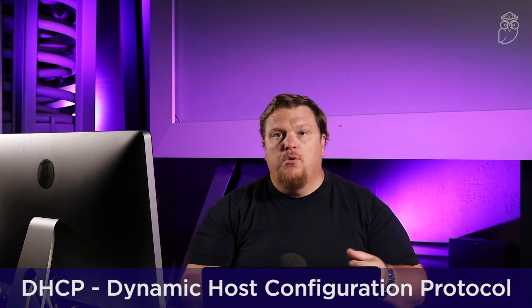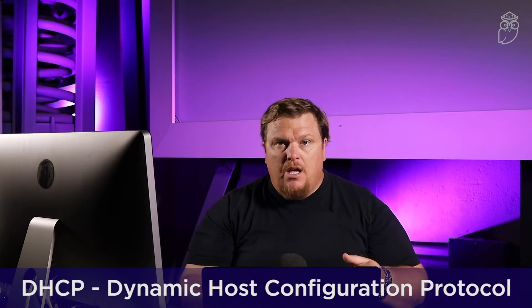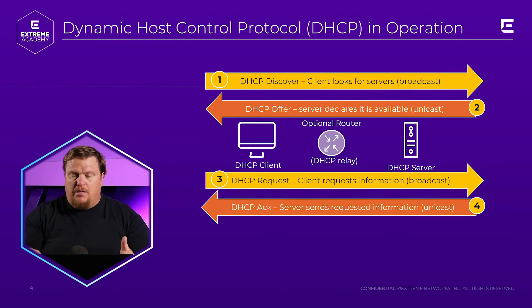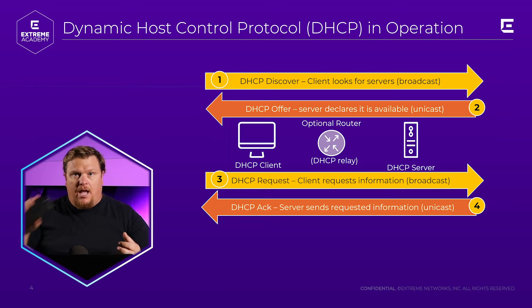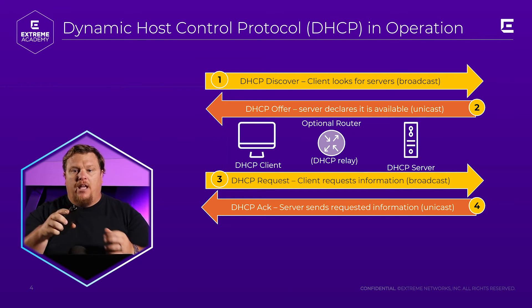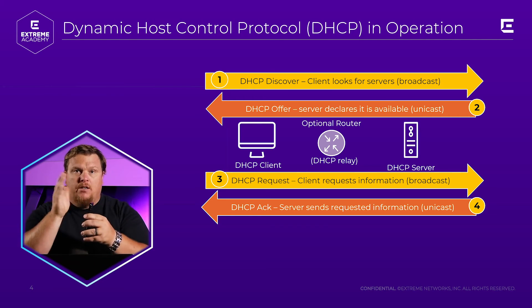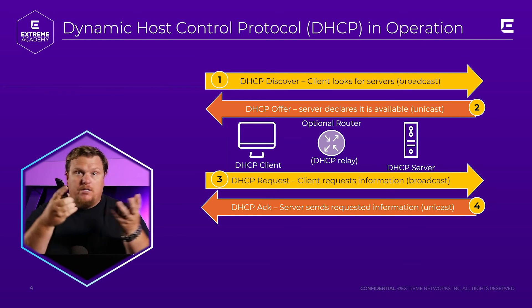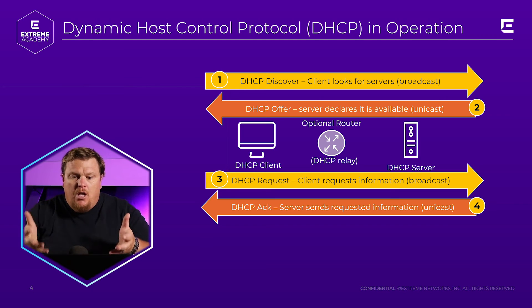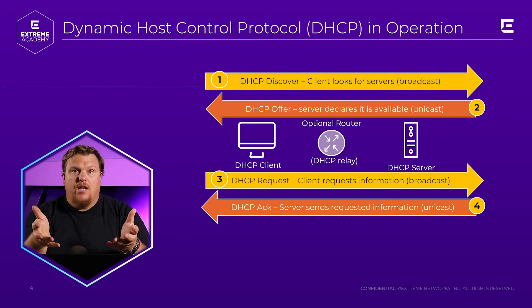But 99% of all the devices in the world that connect automatically get one through something called DHCP — it stands for Dynamic Host Configuration Protocol. DHCP has a lot of functions, but the primary one that everyone associates with it is assigning an IP address. You boot up your machine, you connect to a new wireless LAN, and it's going to go request an IP address. My phone will request an IP, and some machine out there called a DHCP server will give me that address.